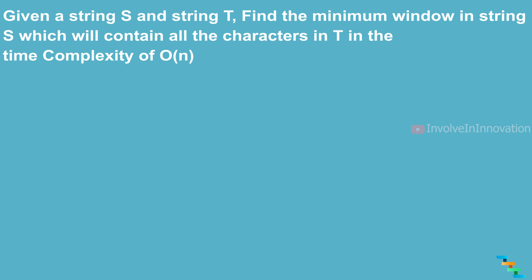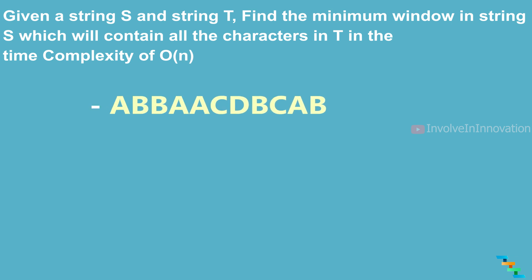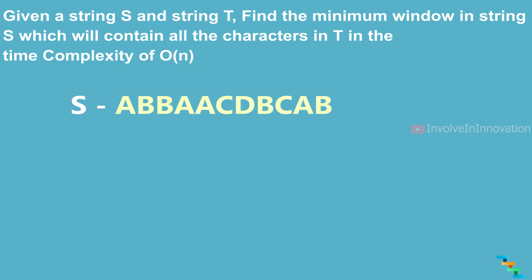For example, let's take the string s as a, b, b, a, a, c, d, b, c, a, b and t is a, b, c. We need to find the minimum substring which will contain all the characters of t in the substring s.